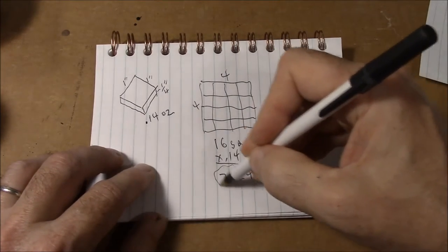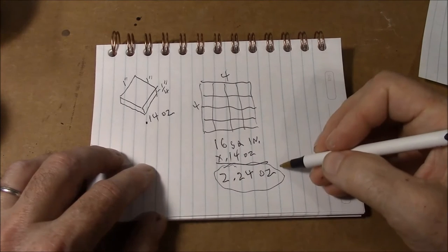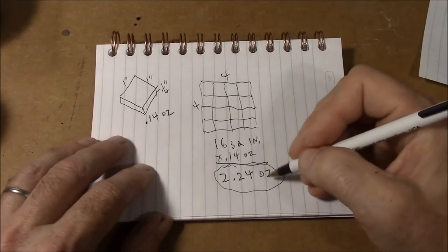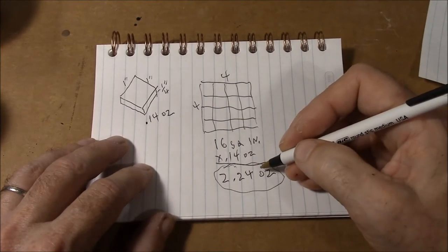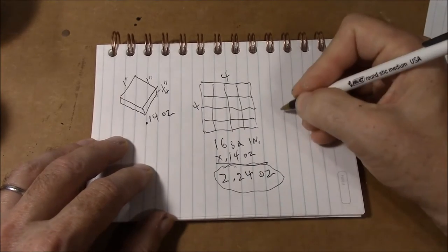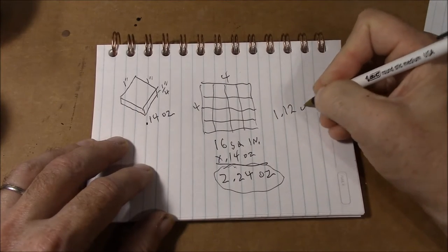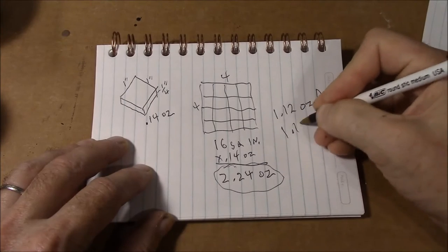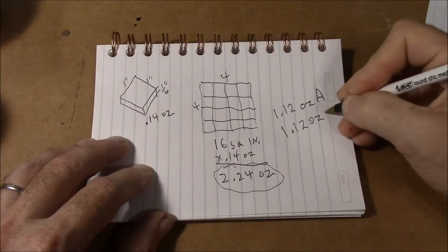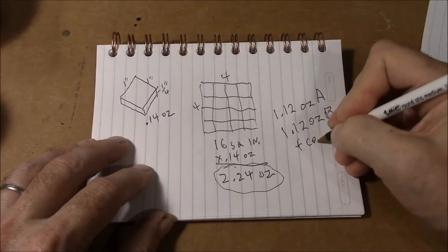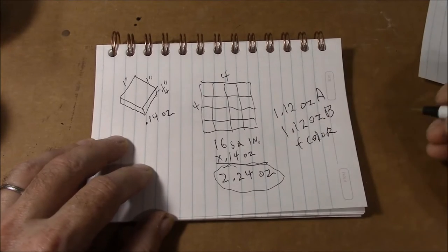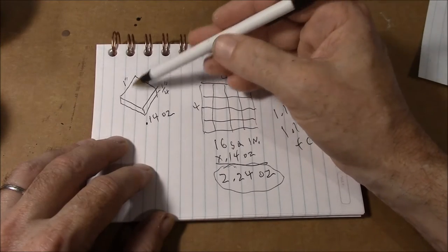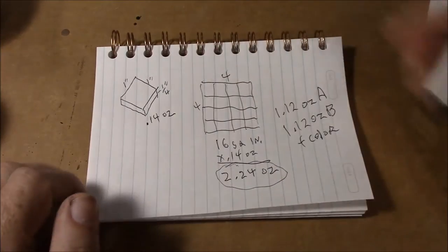So we're going to mix up 2.24 ounces of material and then see how that looks when we get done. Now 2.24 ounces of mixed material, that would mean that you need 1.12 ounces of part A and you're going to need 1.12 ounces of part B and then you're going to need the color that goes on top of it. And we'll still use this measurement in square inches to figure out how much we need for the big project.